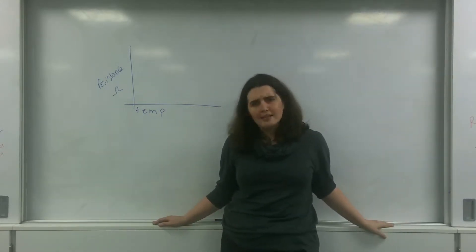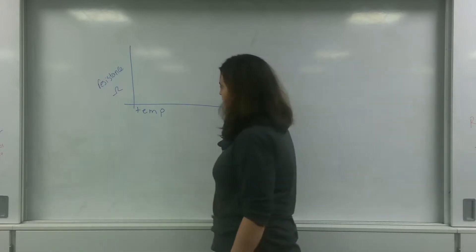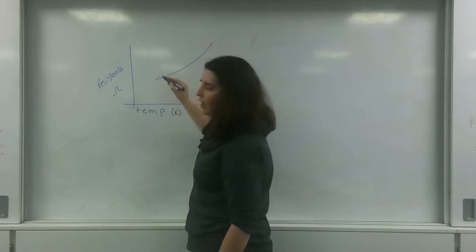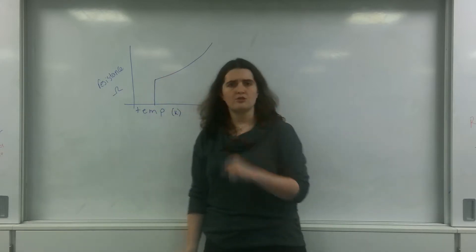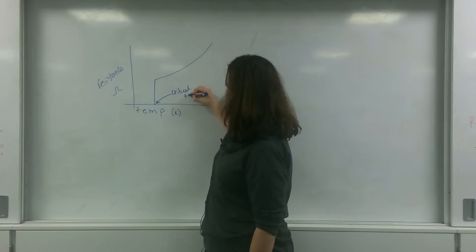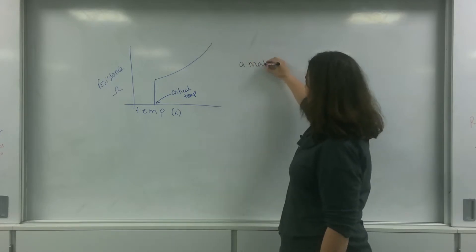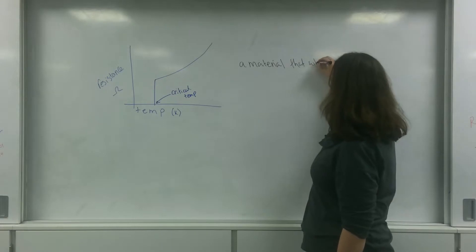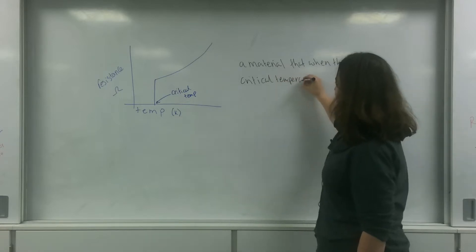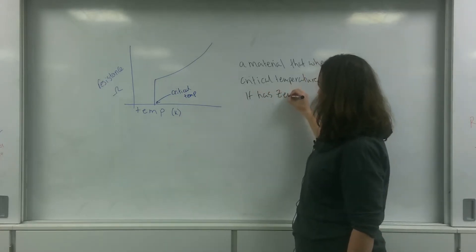But when it gets really cold, atoms start moving less and less. And superconductors — here I'm plotting temperature in Kelvin — when they reach a certain temperature, the resistance drops to zero. We call this the critical temperature. So a superconductor is a material that, when the critical temperature is reached, has zero resistance.